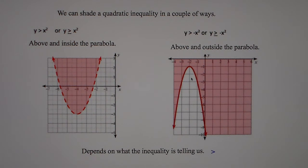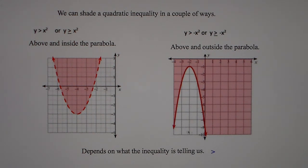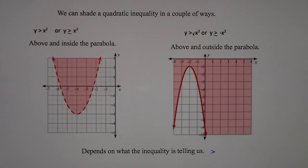On the other side, when we have y is greater than negative x squared — such as y > −6x², y > −6x² + 4x − 8, or y > −2x² + 7x + 8 — our parabola is going to flip upside down, with the arrows going down, and we're going to shade above the parabola and outside of it.